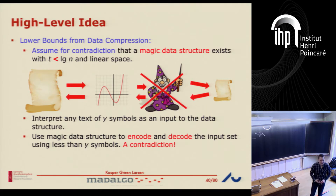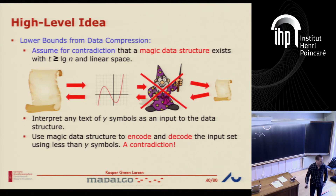This is the approach we'll be taking here instead. That means T is at least log n — that would be the lower bound we get out. If we assume for contradiction it has less than log n query time, we get a contradiction, and therefore the query time had to be at least log n. That's what we'll try to do now.